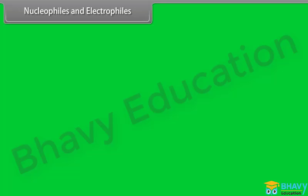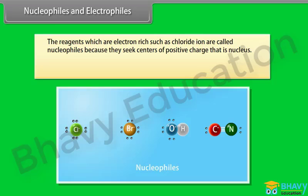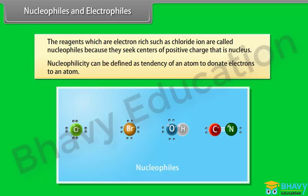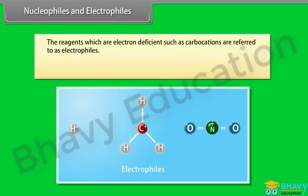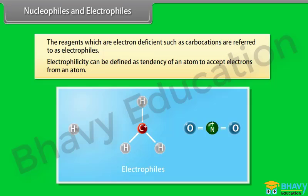Reagents that are electron-rich, such as the chloride ion, are called nucleophiles because they seek centers of positive charge. Nucleophilicity is the tendency of an atom to donate electrons to another atom. Reagents that are electron-deficient, such as carbocations, are referred to as electrophiles. Electrophilicity is the tendency of an atom to accept electrons from another atom.